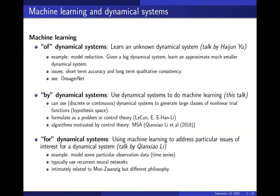Machine learning of dynamical systems: we try to learn a small dynamical system from a much bigger, more complicated dynamical system. This is typical in model reduction. The issues are short-term accuracy — meaning order-one timescale accuracy — and long-term qualitative consistency. Over long times it's hard to expect quantitative accuracy, but we want the smaller system to have qualitatively the same behavior. One example is the Anzac Net, which will be covered by Haijun Yi.